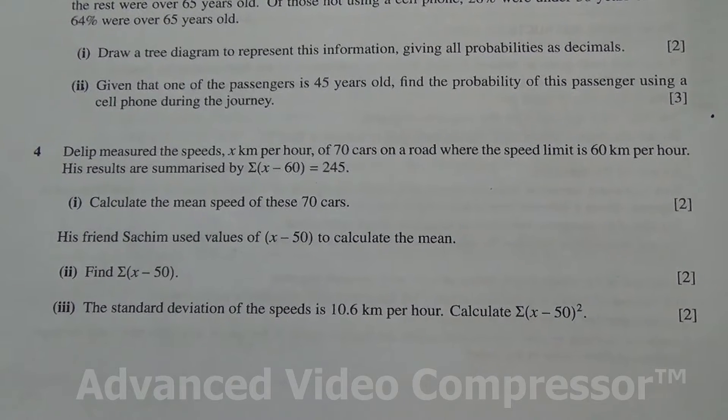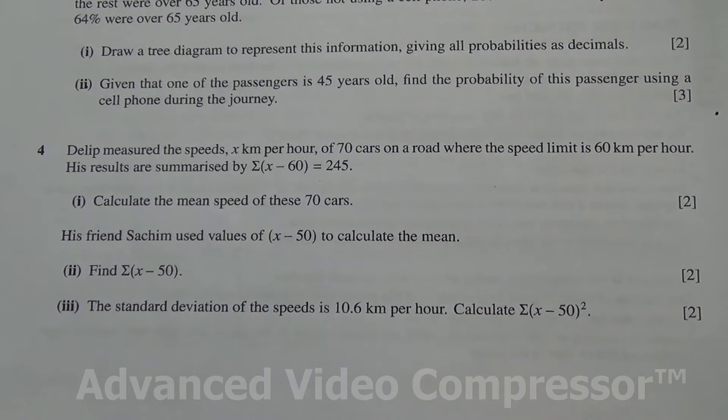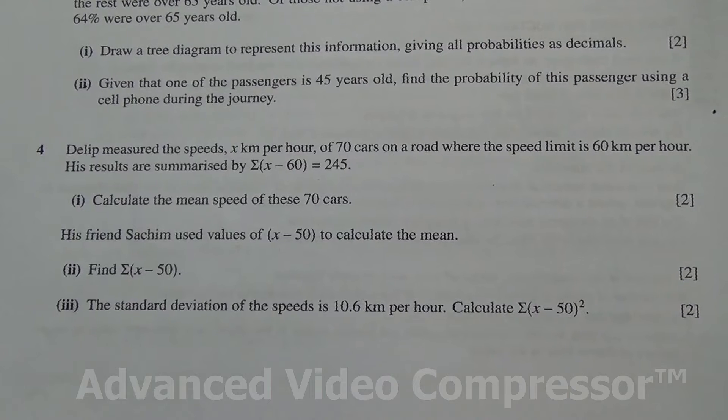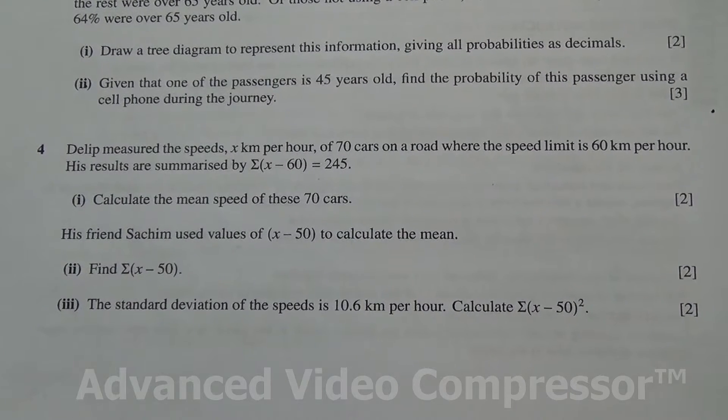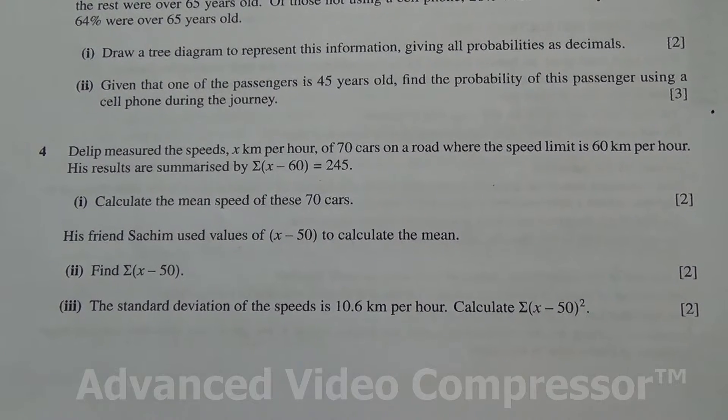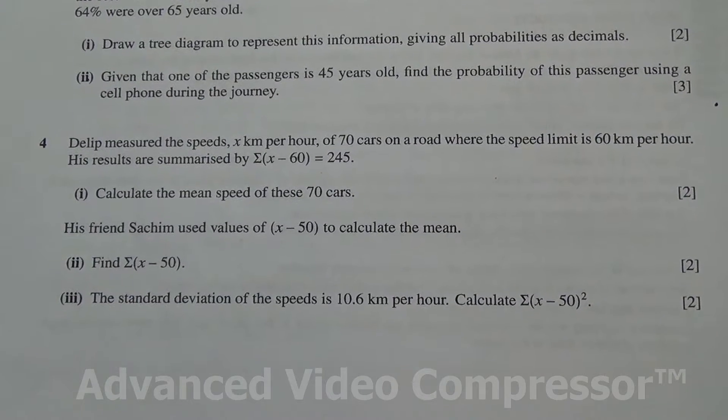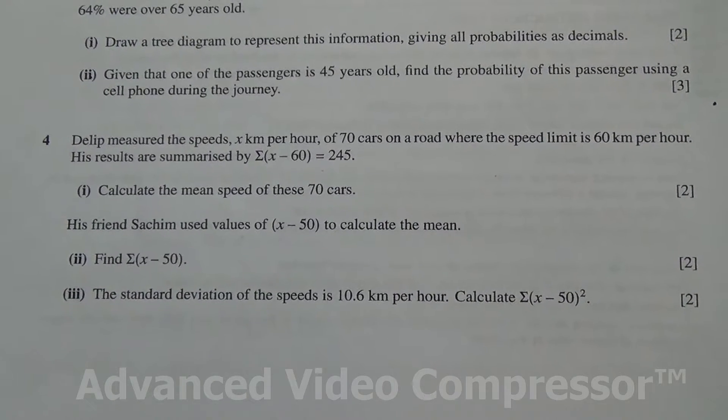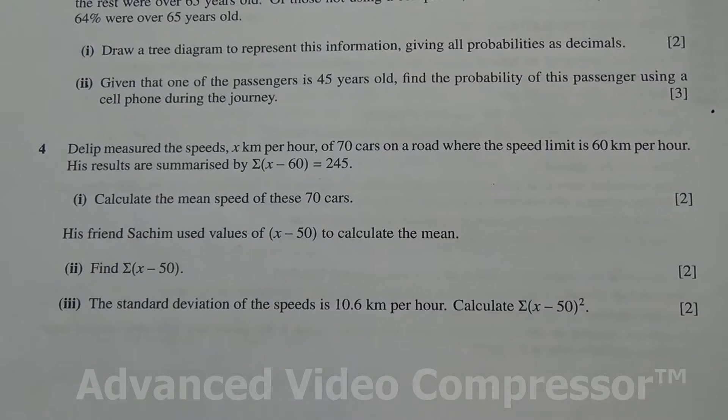His friend Sashim used values of x minus 50 to calculate the mean. Second part, find the summation of x minus 50. And for the third part, if the standard deviation is 10.6 kilometers per hour, we need to find Σ(x minus 50) squared.